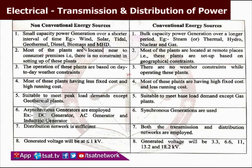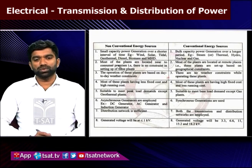That is why conventional methods are used as base load plants. Peak load plants are used when peak demand is very high. At that instant, we can immediately generate power using solar and wind. Presently, electric vehicles use solar and wind. Non-conventional sources can be installed near consumer premises.